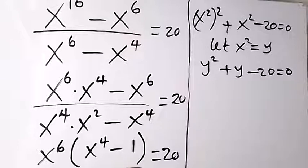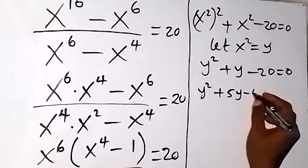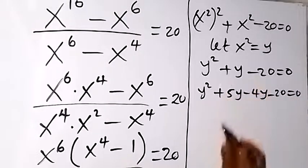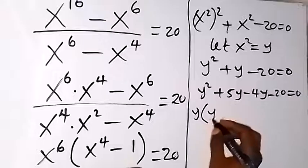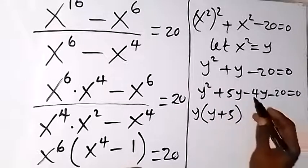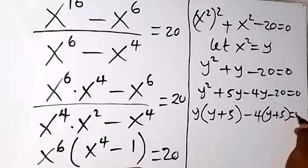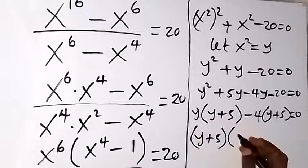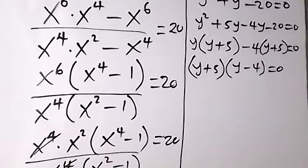We factorize y^2 + y - 20 = 0 by splitting the middle term: y^2 + 5y - 4y - 20 = 0. Since 5y - 4y = y, grouping gives y(y + 5) - 4(y + 5) = 0, and factoring out (y + 5) gives (y + 5)(y - 4) = 0.